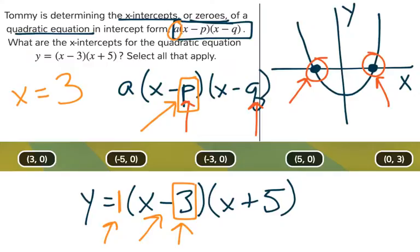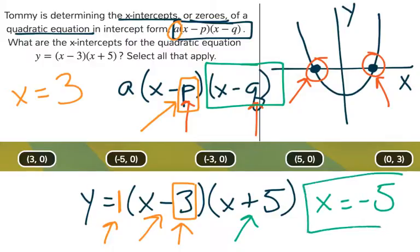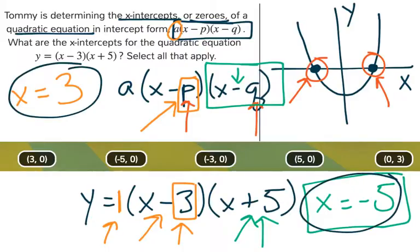And the other one is where it gets tricky, is it says x plus 5. Well in our formula it's x minus q. So what do you do? You take the opposite. So it's actually x equals negative 5 as the other x-intercept. Because we need a negative, we need a minus. And since this is positive 5 instead, we need to flip it around. So our two x-intercepts here are x equals 3, x equals negative 5.